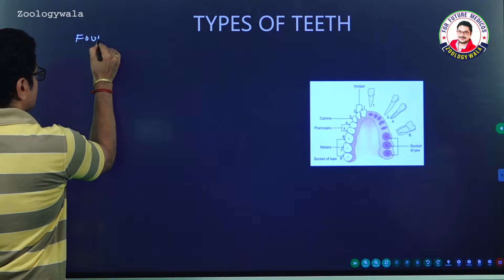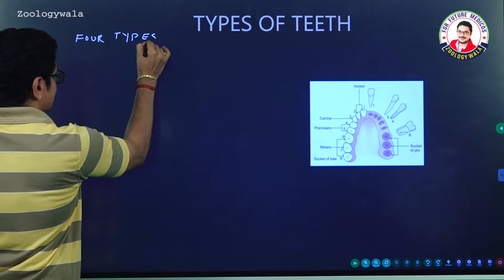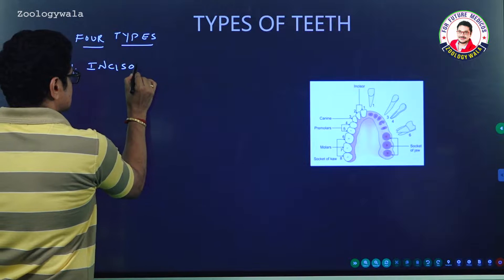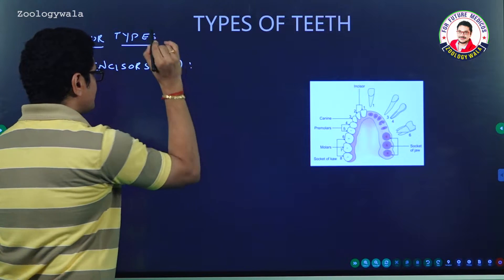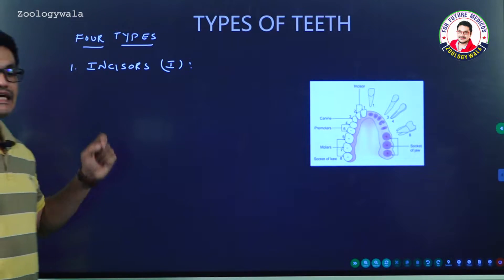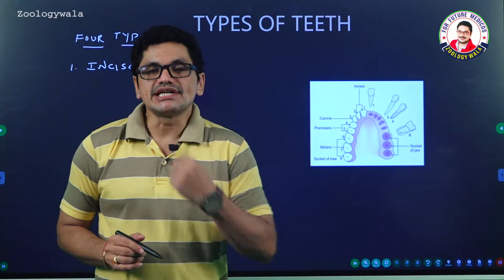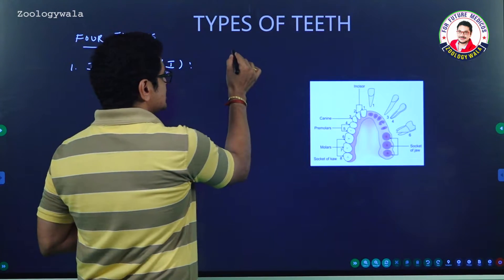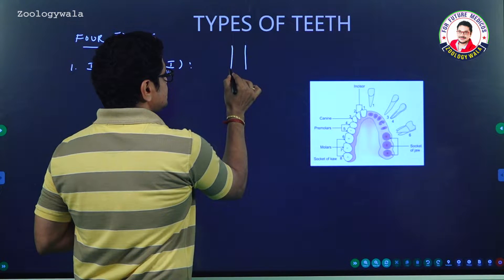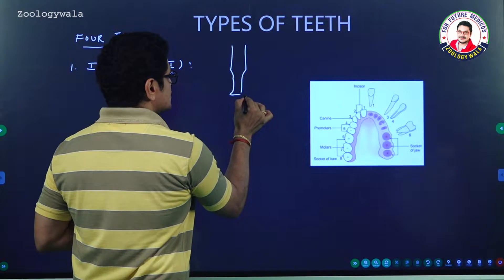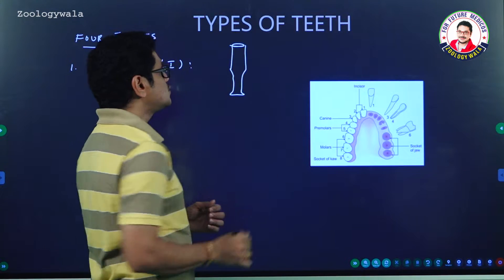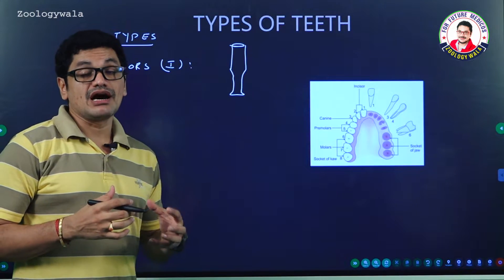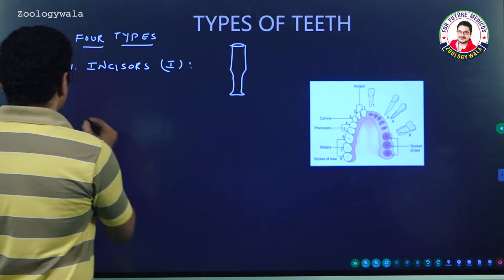In human beings, basically four types of teeth are present. Among those four types, the first one is incisors, represented with 'I'. Incisors are the teeth which are present in the front side, useful for cutting the food material. Generally they are in the shape of a chisel — an instrument useful for sharpening wood items — and they are useful for cutting food materials.